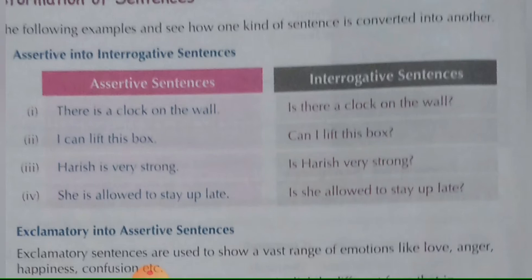Continuing with assertive to interrogative transformations: 'Harish is very strong' becomes 'Is Harish very strong?' And 'She is allowed to stay up late' — we begin this sentence with the to-be verb 'is' — becomes 'Is she allowed to stay up late?'